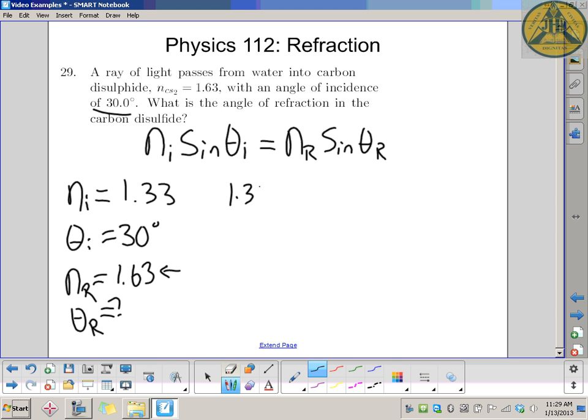Let's put everything in here: 1.33 sin 30 equals 1.63 sin of the refracted angle. So working out the left side, 1.33 times sin 30 - sin 30 is a half - so that's 0.665 equals 1.63 sin of the refracted angle.